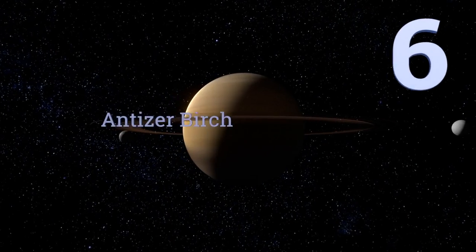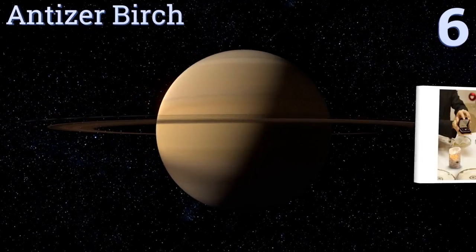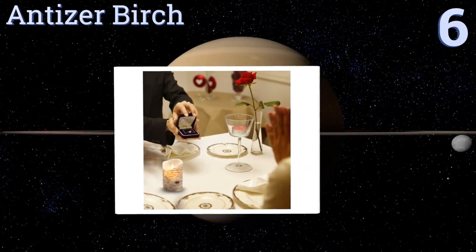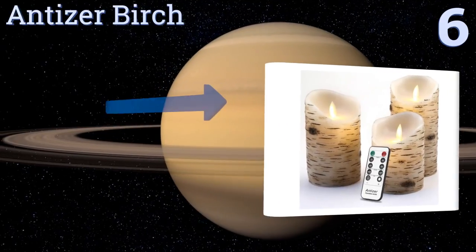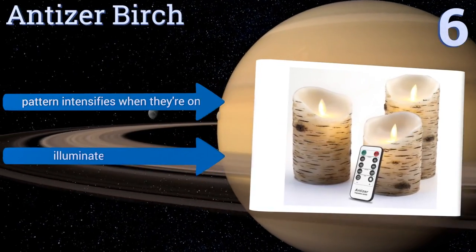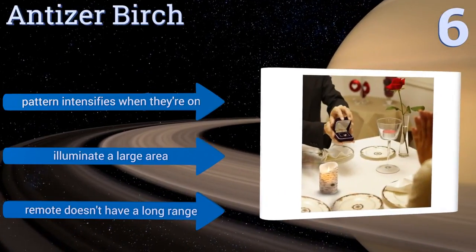Moving up our list to number six, if you're trying to connect with nature more by dining al fresco, the Antizer Birch will blend right into your surroundings. Their rustic chic design makes them ideal for placing on the tables at an outdoor wedding or putting around a summer cabin. Their pattern intensifies when they're on and they illuminate a large area.